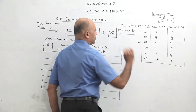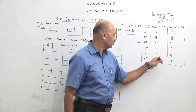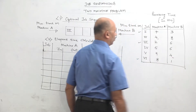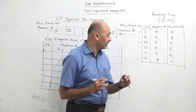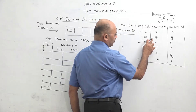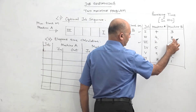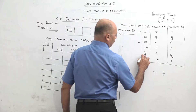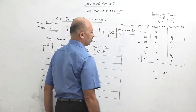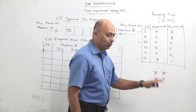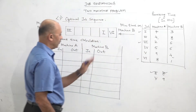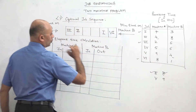Now two jobs remain with values: 4, 8, 5, 6, 9, 4. The minimum time is 4, but there are two 4s. That is the rule of tie. If there is a tie between two jobs, compare the other time values. For job number 2, the minimum time is 4 and the other value is 8. For job number 5, it is 4 and 9. The lower other value is 8, so select job number 2. Job 2's minimum time is on machine A, so it goes from the left hand side. Write here job 2.